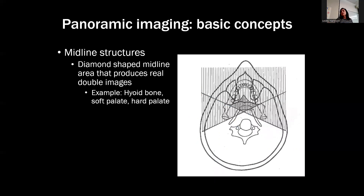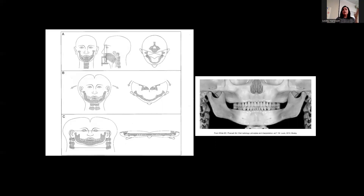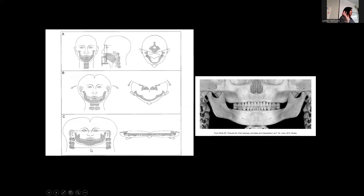The midline structures - this shaded diamond area - is where you're most likely to see double real images. It's the area that's really there, but you're seeing it mirrored - a double image of something that's real. Examples include the hyoid bone, the soft palate, and the hard palate. Something like the spine: you clearly only have one spine, but a lot of times it doubles up and you get a little spine on either side of the pano.